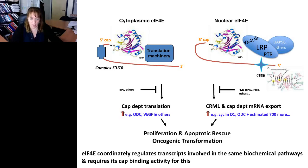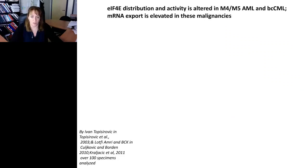Another way to sum this up is that EIF4E coordinately regulates transcripts involved in the same biochemical pathways. It exports cyclins as a group, for instance, and helps cell cycle progression that way. This always requires the methyl-7-guanosine cap binding activity. So let's look at what EIF4E looks like in a human malignancy.